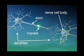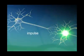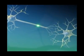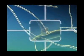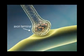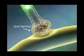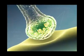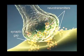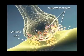In this animation, an impulse is represented by a green ball of light. The impulse travels along the axon until it reaches the terminal, where it causes neurotransmitters to be released into the synapse. In this animation, neurotransmitters look like red balls of light.